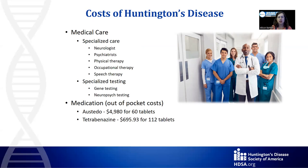Now we're going to talk about the cost of Huntington's disease, because the costs are part of the reason why legal planning is so important. The costs of medical care include specialized care by a neurologist, psychiatrist, physical and occupational therapy, and maybe speech therapy. There's also specialized testing like gene testing — if you get tested anonymously, you have to pay out of pocket. Neuropsychological testing is often not covered by insurance and can cost thousands of dollars, but is really important for social security disability. Regarding medication, the out-of-pocket cost is $5,000 for 60 tablets of Austedo and $700 for 112 tablets of tetrabenazine — that's not cheap.